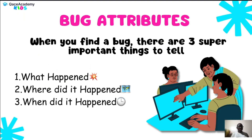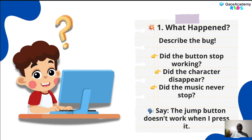When you find a bug, there are three important things to tell. Number one: what happened? Describe the bug clearly. Did the button stop working? Did the character disappear? Did the music never stop? For example, say: 'The jump button doesn't work when I press it.'